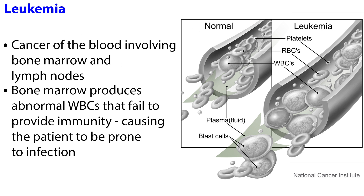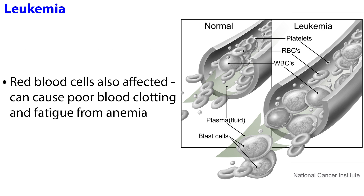Leukemia is cancer of the blood involving the bone marrow and lymph nodes. When cancerous, the bone marrow produces abnormal white blood cells that fail to provide immunity, causing the patient to be prone to infection. Leukemia also affects red blood cells and can cause poor blood clotting and fatigue from anemia.